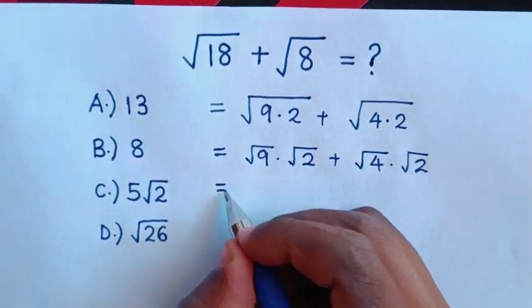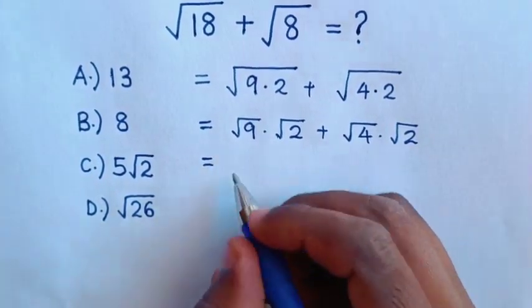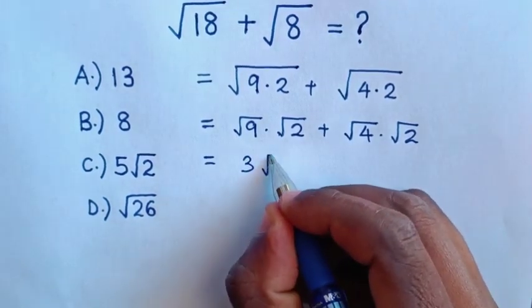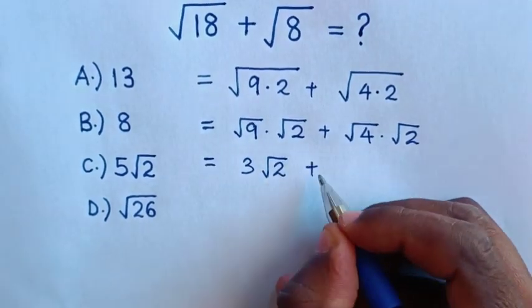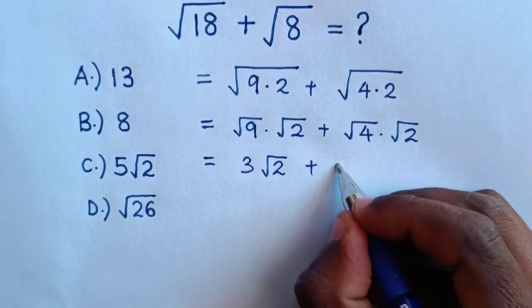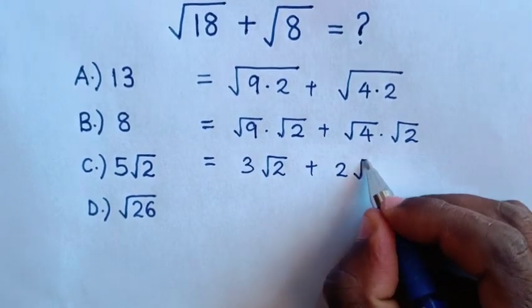This will be equal to square root of 9 is 3 times square root of 2 plus square root of 4 is 2 times square root of 2.